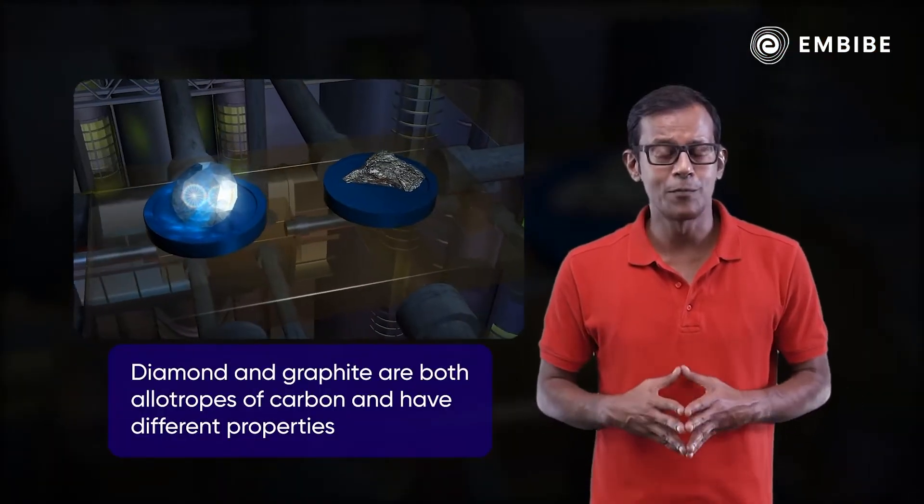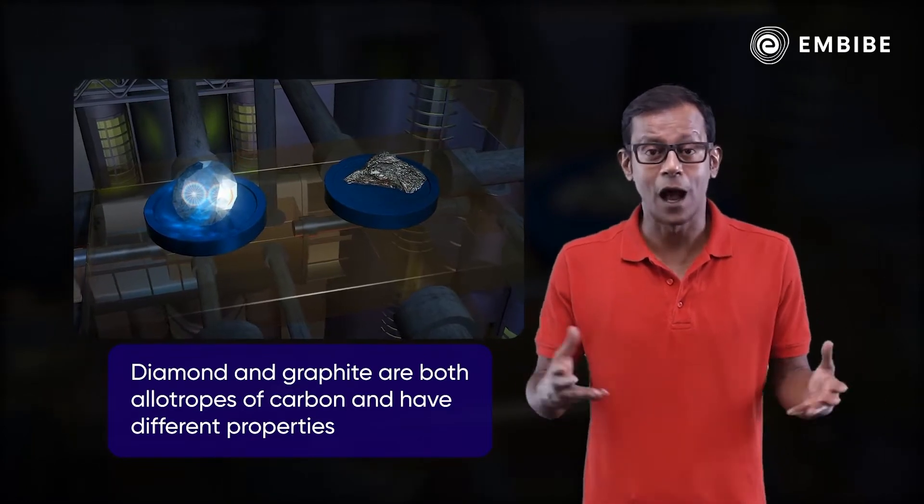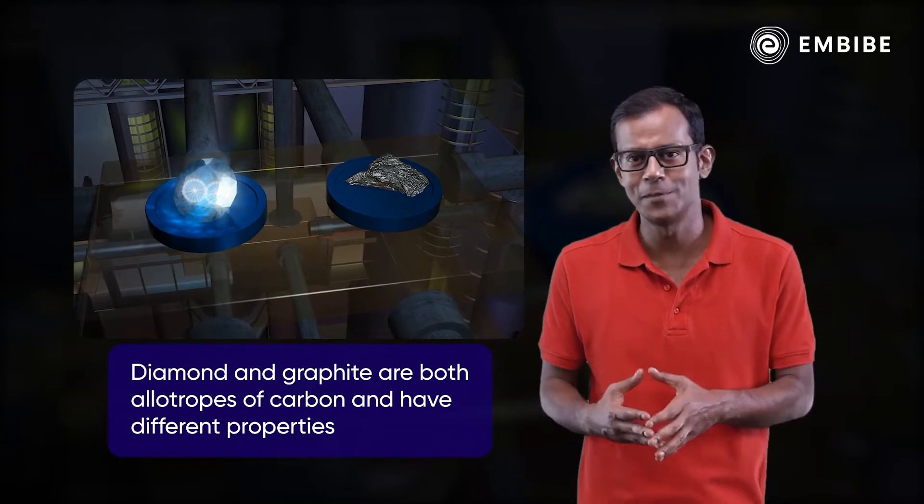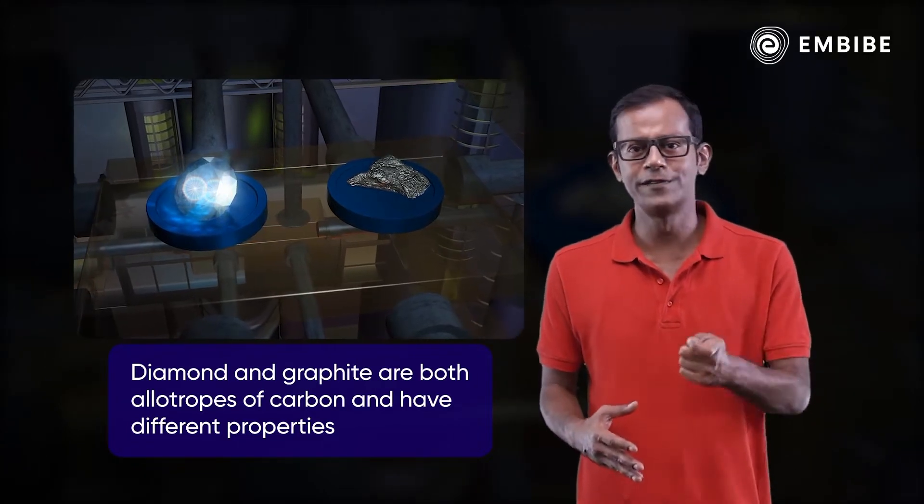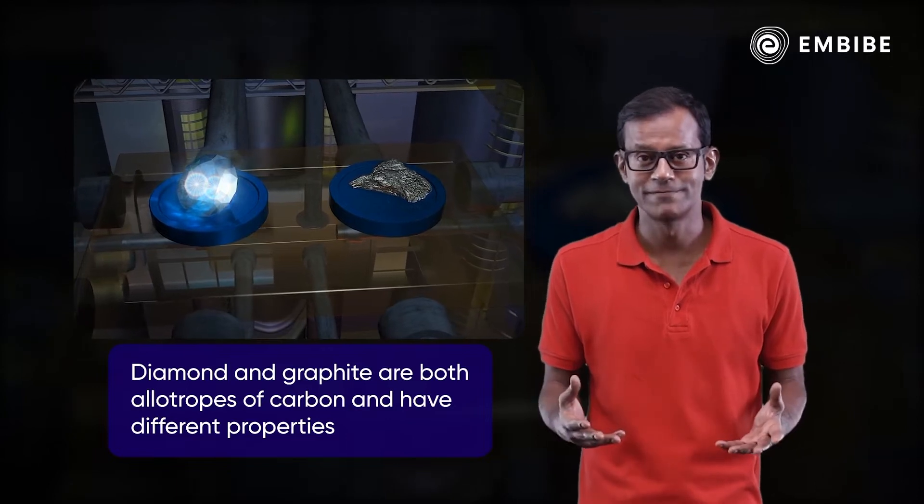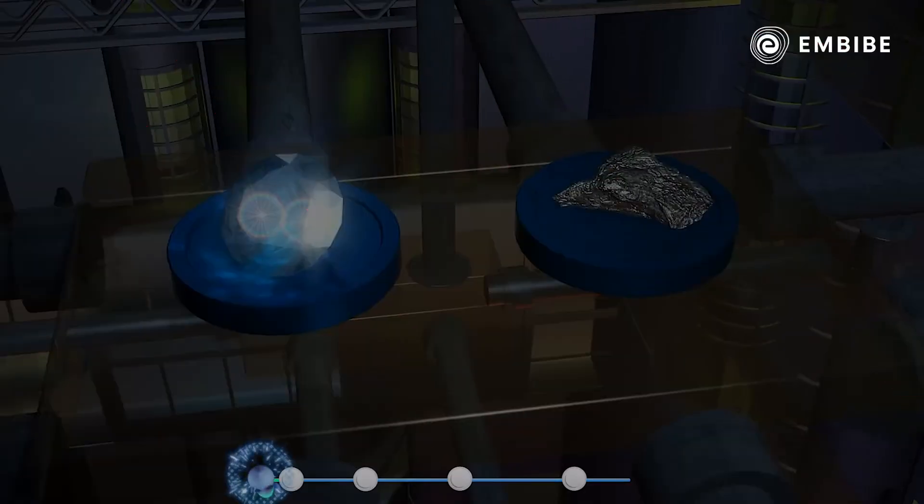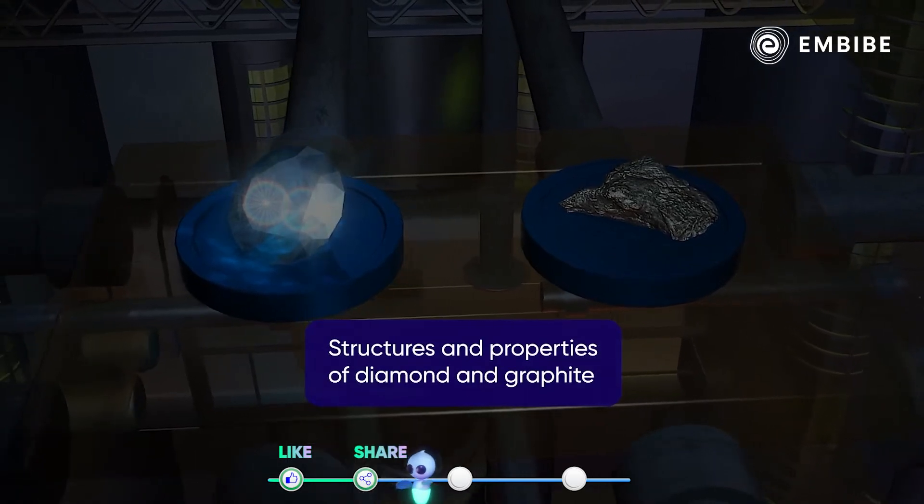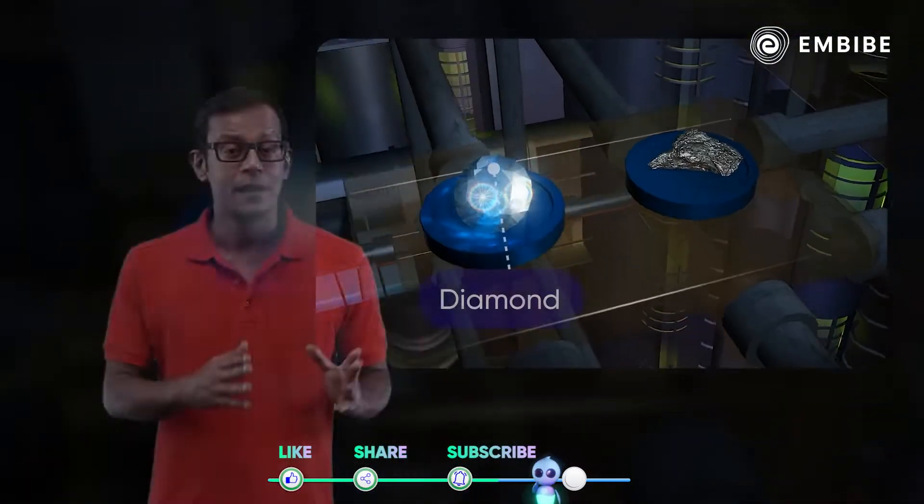If diamond and graphite are both made up of carbon, then how come one of them is super strong whereas the other one is soft and slippery? How come one of them does not conduct electricity whereas the other one does? Come, let's find out. Our objective is to study the structures and properties of diamond and graphite.